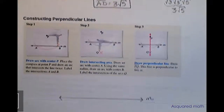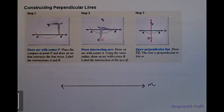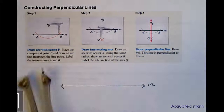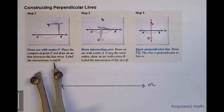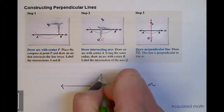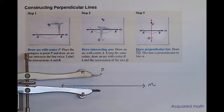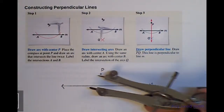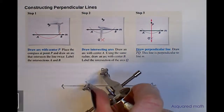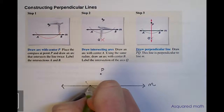Next we are going to look at how to construct perpendicular lines — we need a compass and a straight edge for this. The first step is to have a line M. Place the compass at point P and draw an arc that intersects the line twice; label the intersections A and B. I open my compass so it is a little farther from point P and passes the line a bit, so when I draw my arc I'm able to cross over the line. Putting the compass at center point P and drawing my arc all the way around, I have two intersection points — we'll call them A and B.